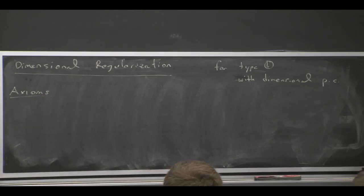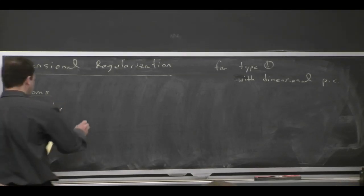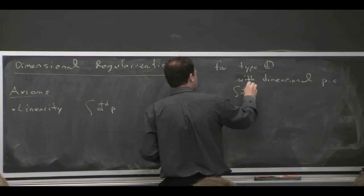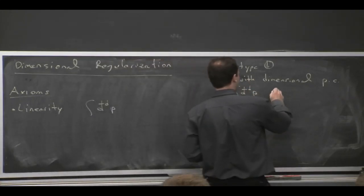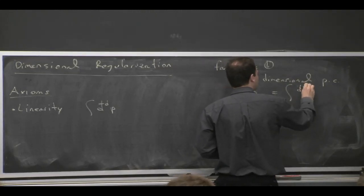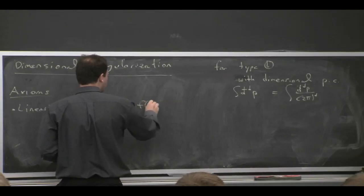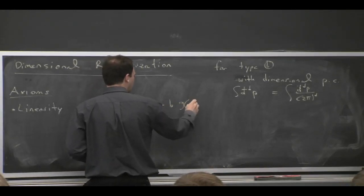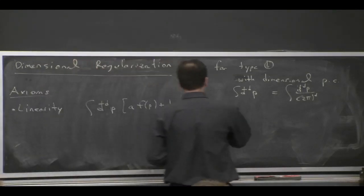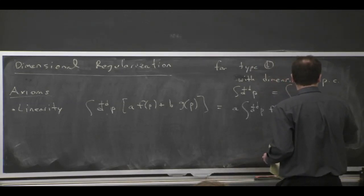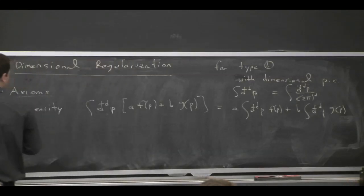You can actually derive dimensional regularization by just imposing axioms. If you say that you want a loop integration that's linear. I should have said this earlier - my notation with dimensional regularization is I put a little cross on the D, and that means dividing by the 2π. So that means d^D p over 2π to the D. Linearity means that if I'm integrating some function that can be decomposed into a sum of two pieces, a and b being constants, f and g being functions, then I can write that out as an integral over f plus an integral over g, which really is something that almost every reasonable definition of the integration will satisfy.